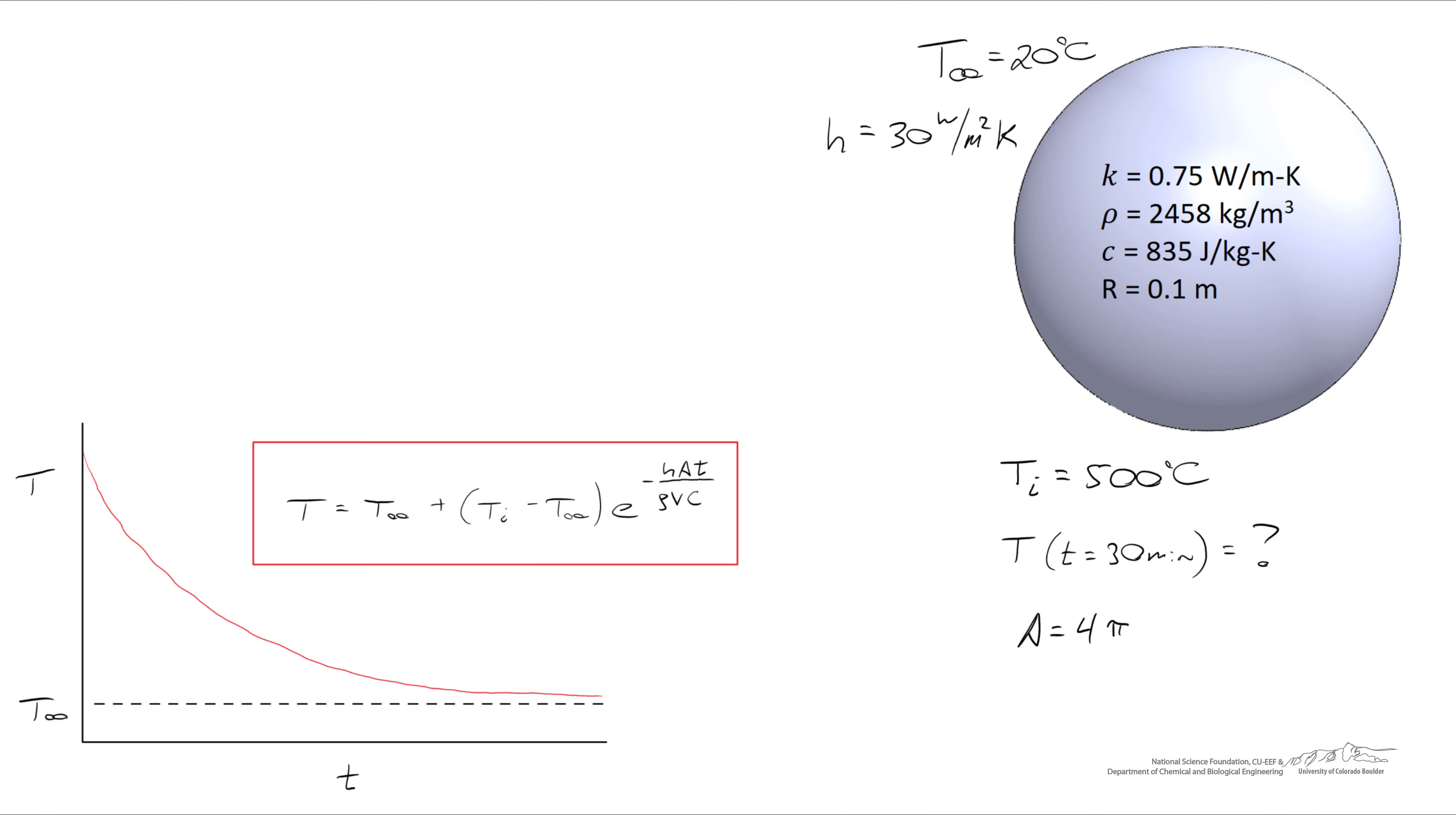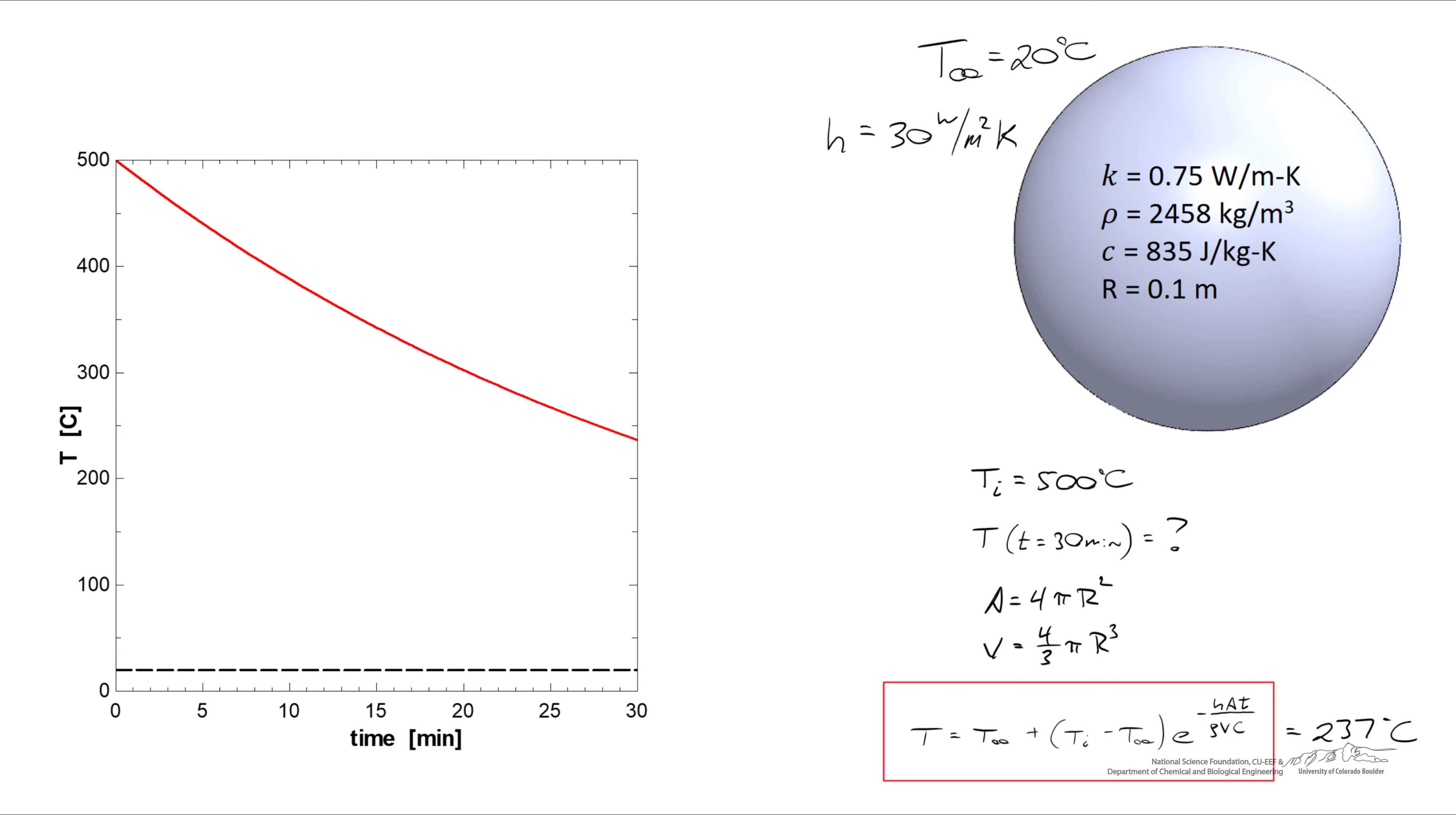We know the area of a sphere is 4 pi r squared, the volume of our sphere is 4 thirds pi r cubed, and when we plug numbers into this equation, being real careful with units, we'll find that the temperature after 30 minutes is equal to 237 degrees C. And here I've made a quantitative graph of temperature as a function of time, where T infinity is the dashed horizontal line.